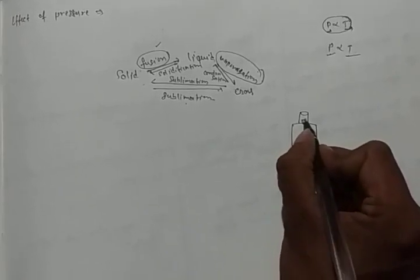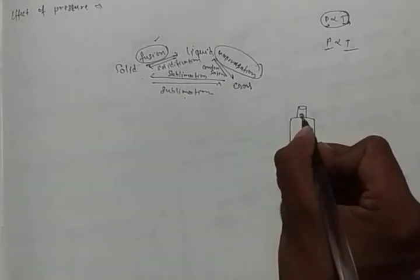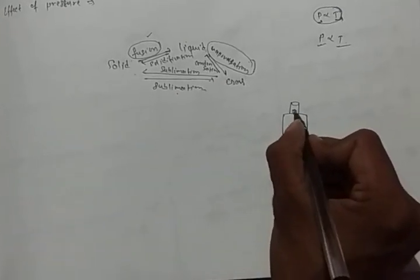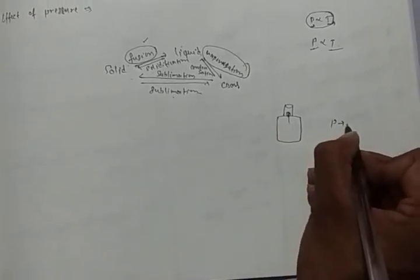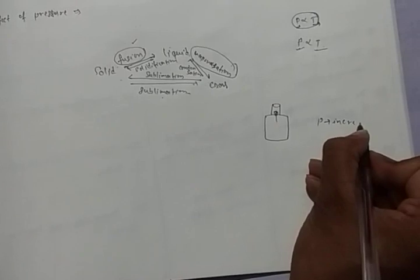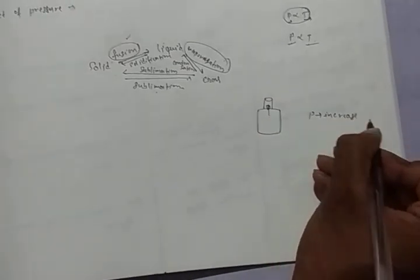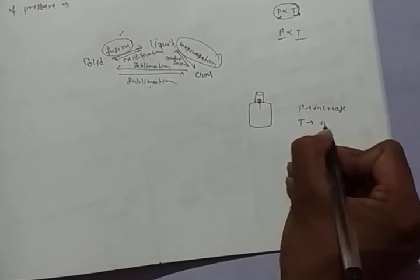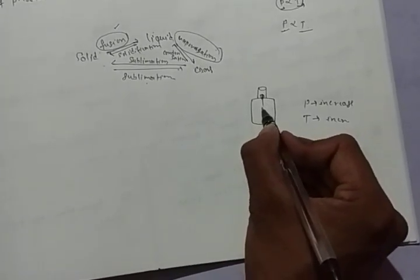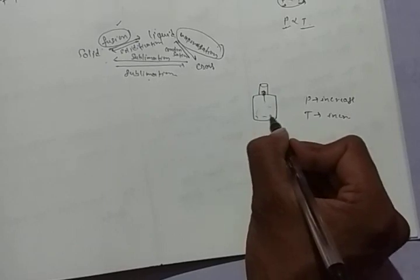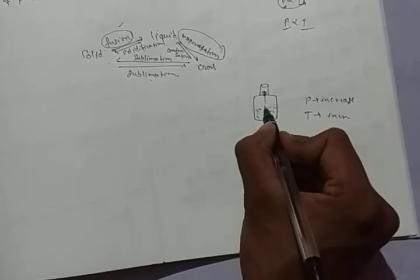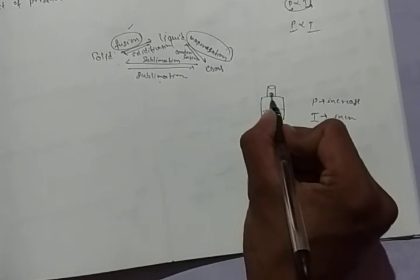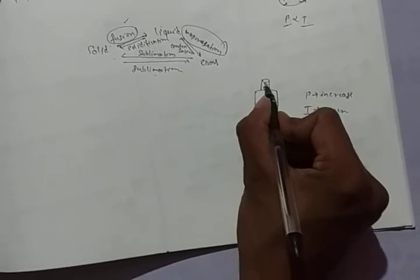We will press the piston downward on the lower side. When we press, what will happen? Pressure will increase. When pressure increases, temperature will also increase. When temperature increases, it will make a liquid form — that is liquid petroleum gas, LPG. If we release and temperature increases, the gas will come out. This is the effect of pressure on matter.